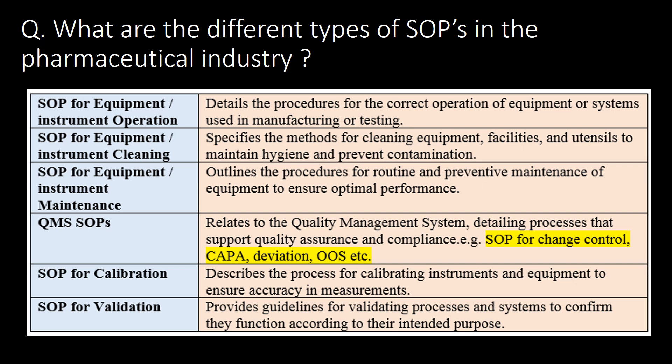What are the different types of SOPs in the pharmaceutical industry? Here are six important types: first, SOP for equipment or instrument operation; second, SOP for equipment or instrument cleaning; third, SOP for equipment or instrument maintenance; fourth, QMS SOPs, which includes SOP for change control, CAPA, deviation, OOS, market complaint, etc.; fifth, SOP for calibration; and sixth, SOP for validation.